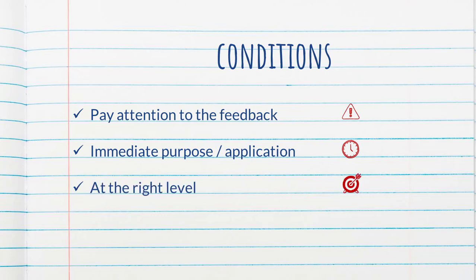And the third condition, which is definitely the hardest one to overcome in the classroom, is that the feedback needs to be at the right level for each and every student. And while this makes sense in theory, it is impossible for teachers to know what each and every learner is ready to acquire.